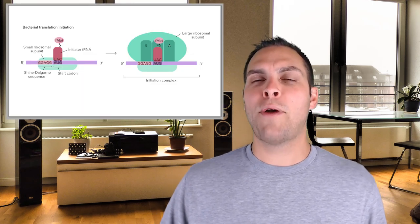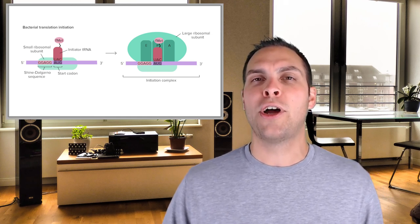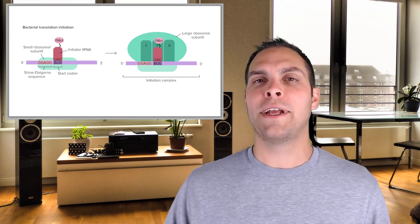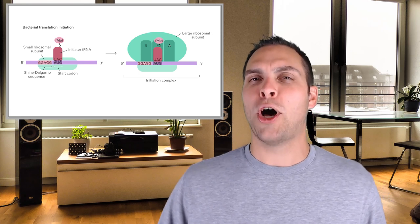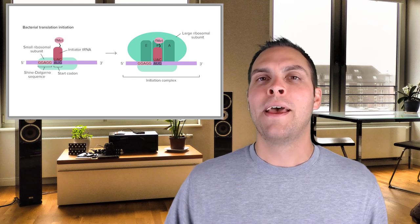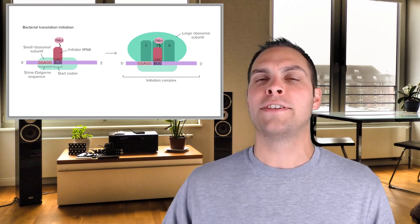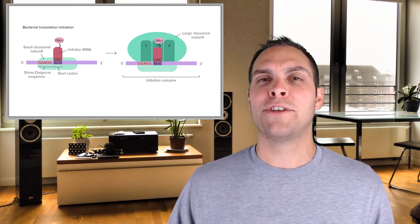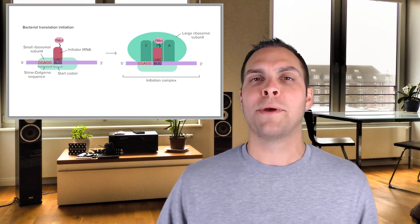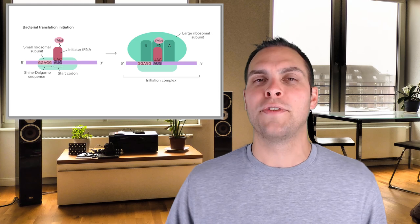Now let's talk about how ribosomes actually function. The first step is ribosomal assembly, which is slightly different in prokaryotes and eukaryotes. Assembly begins with a small ribosomal subunit that already has a charged methionine tRNA attached to it. That small ribosomal subunit then finds a messenger RNA ready to be translated and lands at the translational start site, at which point the large ribosomal subunit is recruited to form the whole ribosome complex — like a hamburger bun with the messenger RNA as the hamburger.